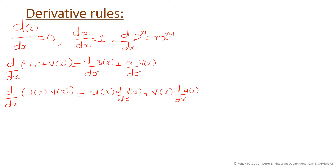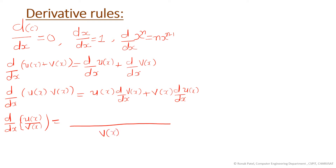Then the division rule: for u(x) divided by v(x), the derivative has denominator v(x) squared. In the numerator: v(x) times d/dx of u(x), minus u(x) times the derivative of v(x). This is the division rule for derivatives.